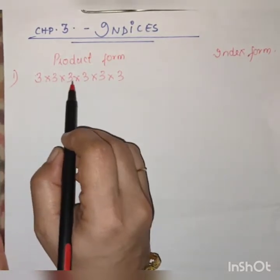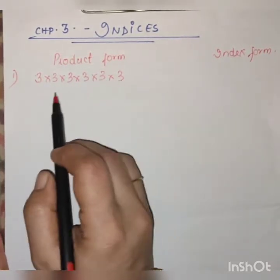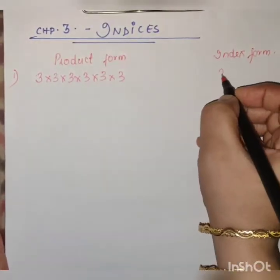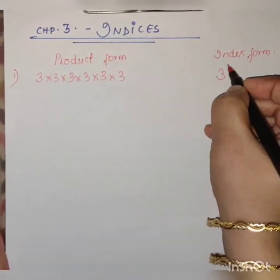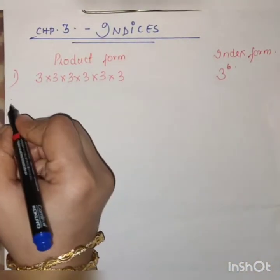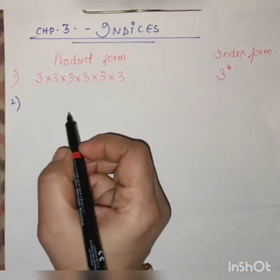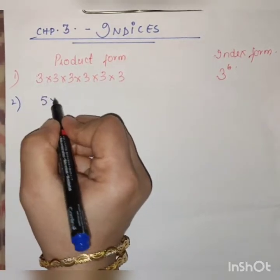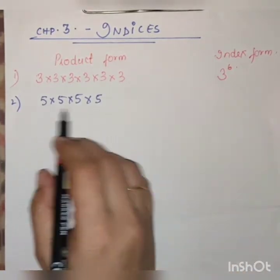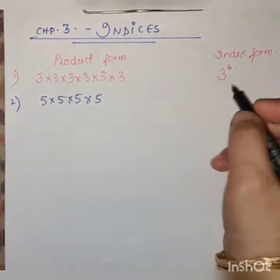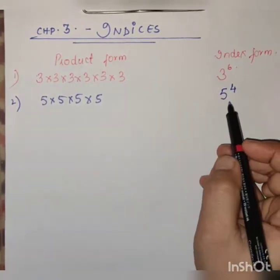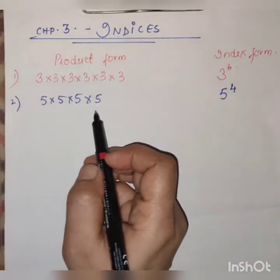We are multiplying 3 - how many times? 1, 2, 3, 4, 5, 6. Now we are expressing this product form in index form, so 3 raised to 6. Next example: we can say 5 into 5, so 5 is multiplied 4 times, so we will write 5 raised to 4. This is index form and this is product form.